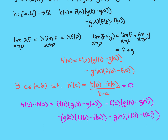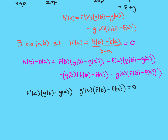Re-reading what the mean value theorem now says for h: there exists a c in (a, b) such that h'(c) = 0. Plugging in what h' is in terms of f and g, we get that there must exist a c in (a, b) such that f'(c) times g(b) minus g(a), minus g'(c) times f(b) minus f(a), equals zero. Taking that second term to the other side gives exactly the statement of the generalized mean value theorem.